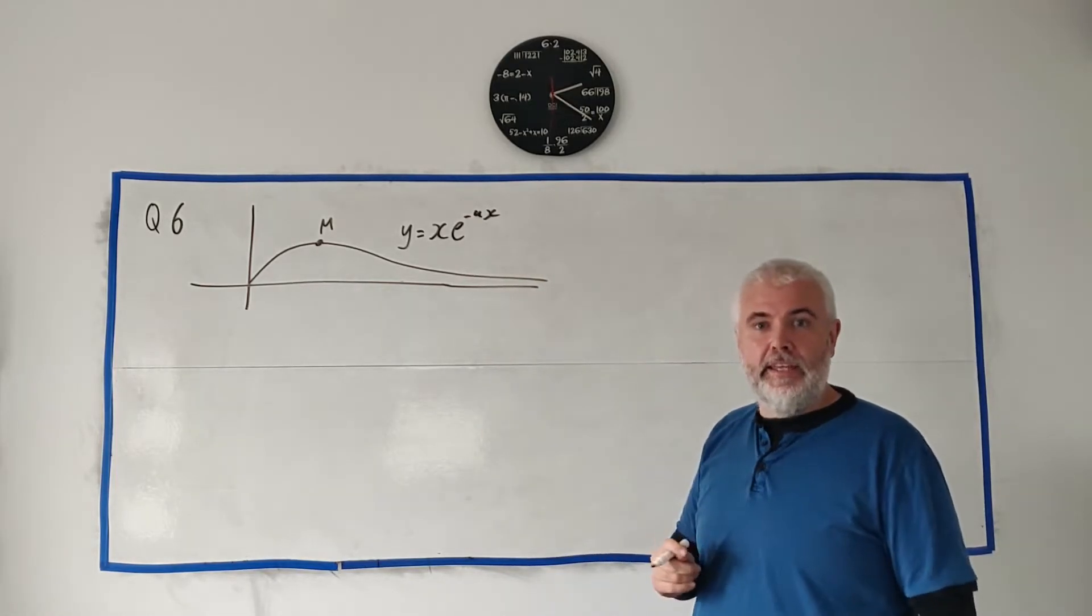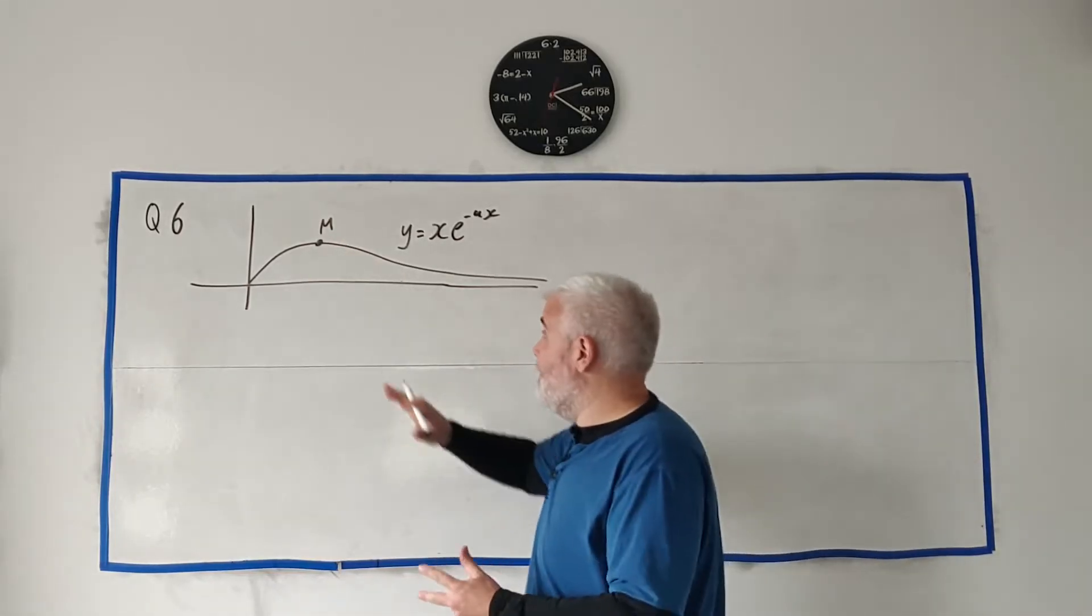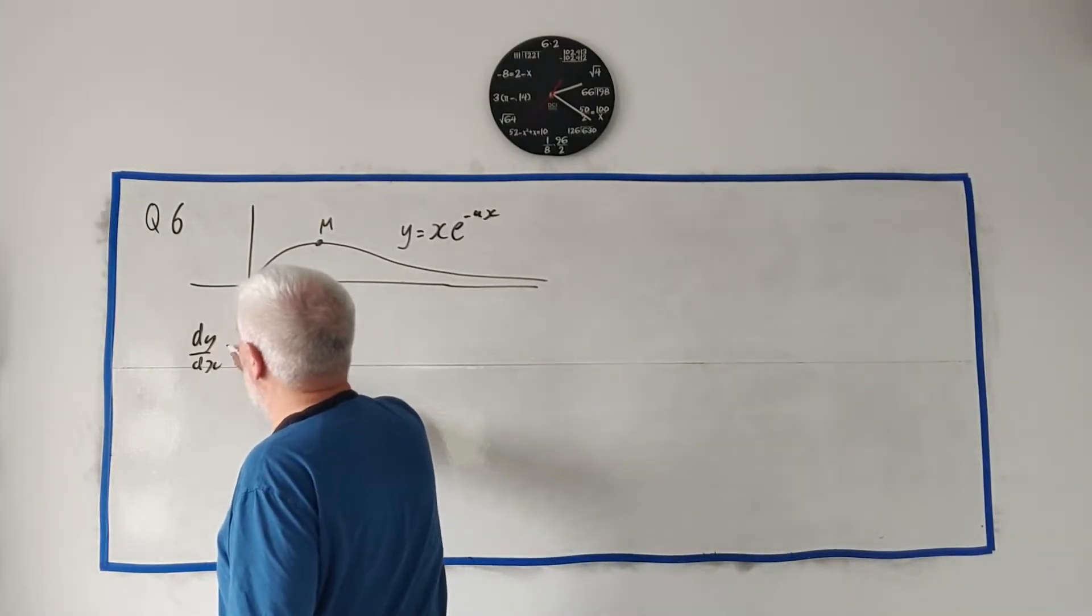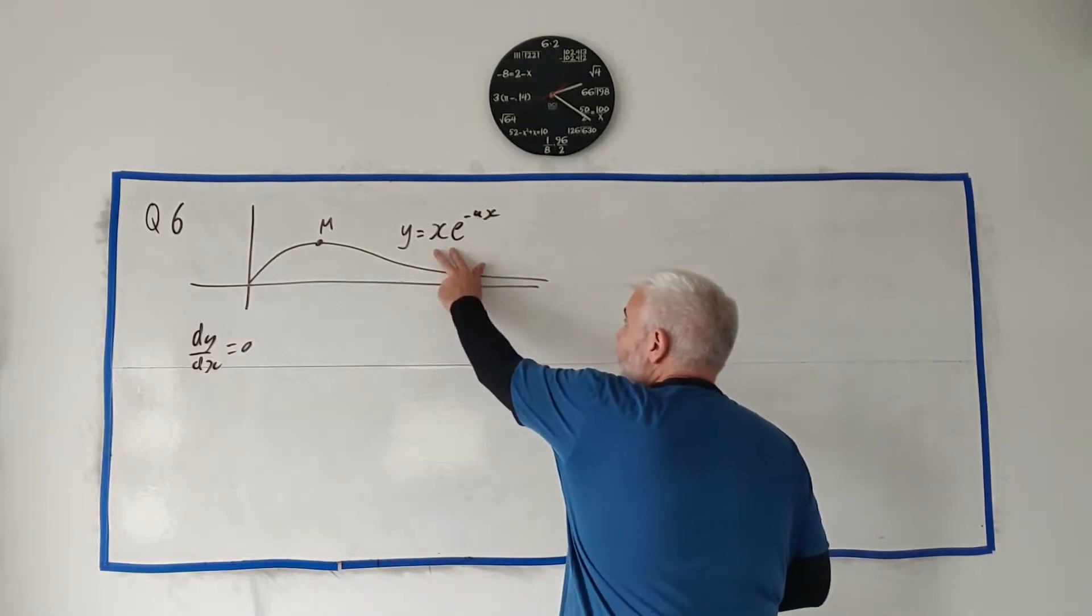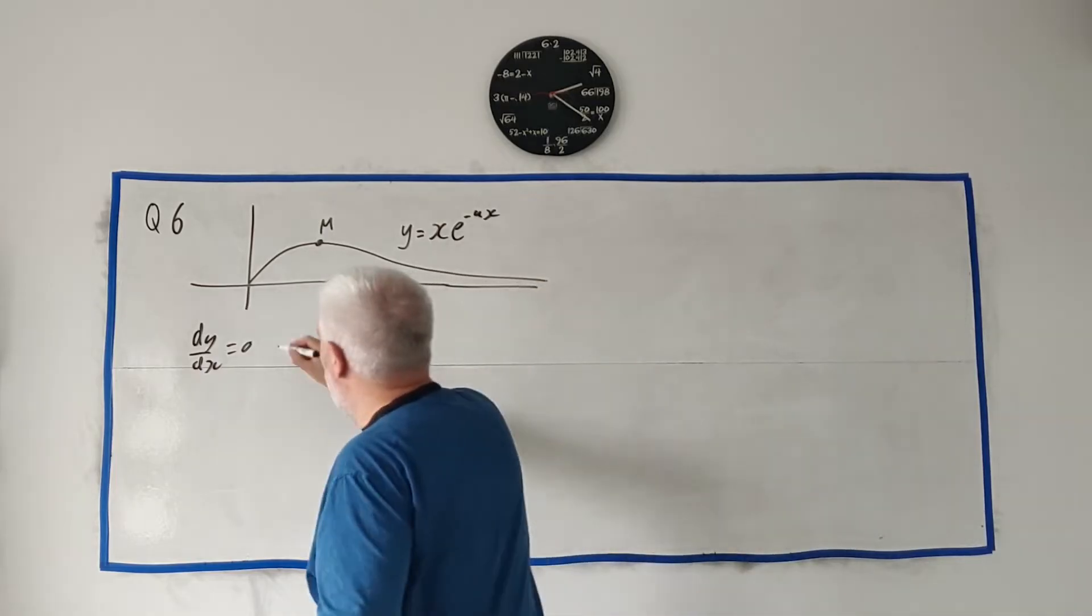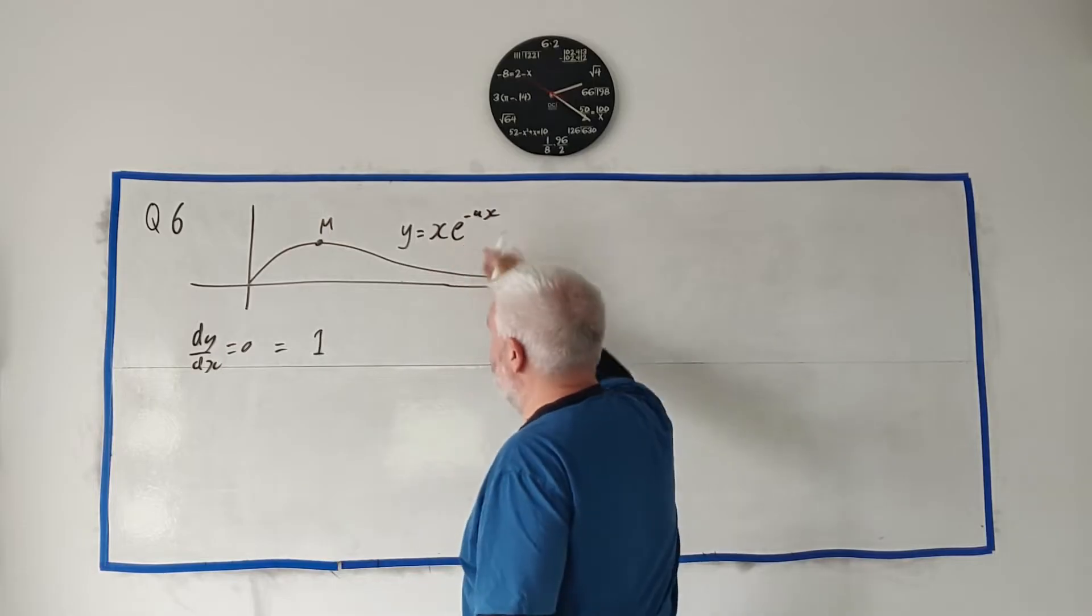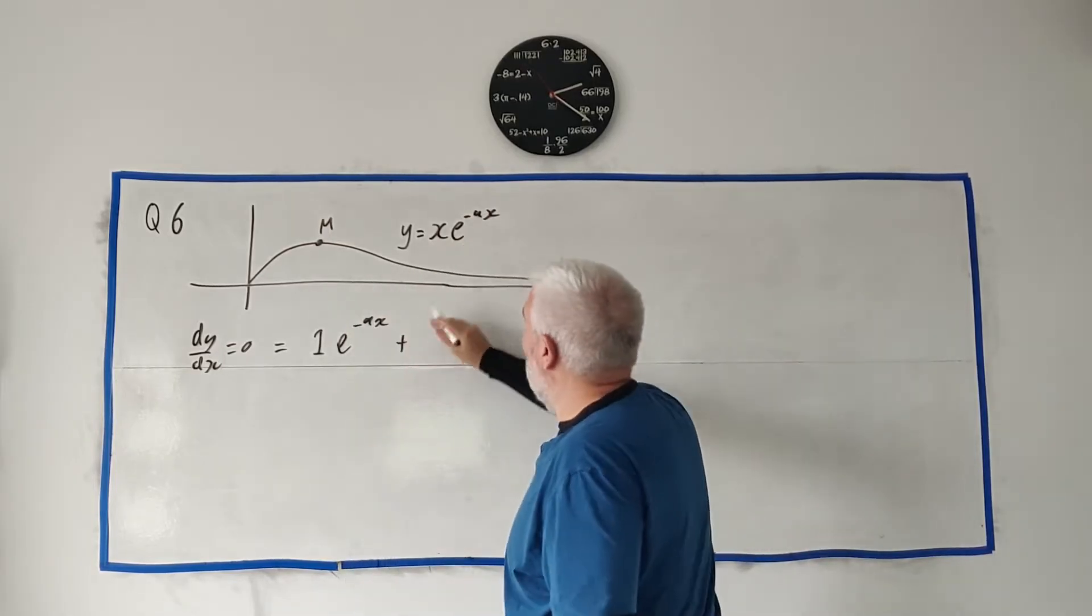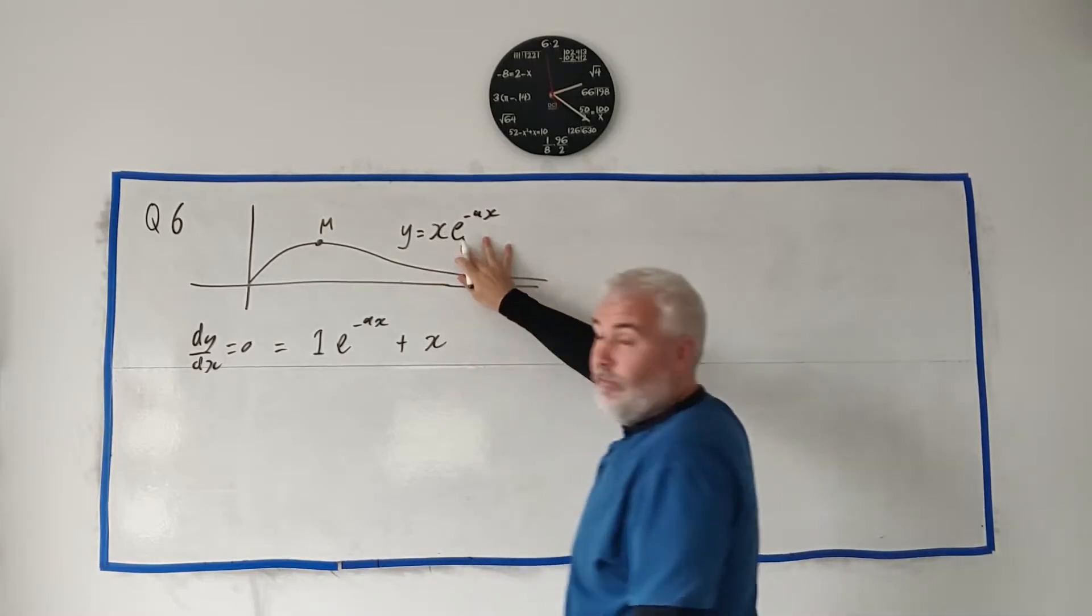To do part A, they tell us M is a maximum point, so that means the derivative dy/dx equals 0. We're going to use that to solve this. Let's differentiate. This is a product rule, two things multiplying. The product rule: differentiate the first one, that becomes 1, and leave the second one alone, e^(-ax).